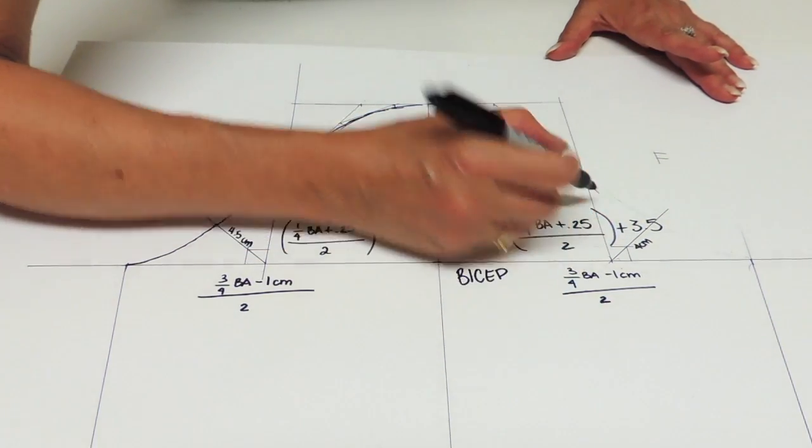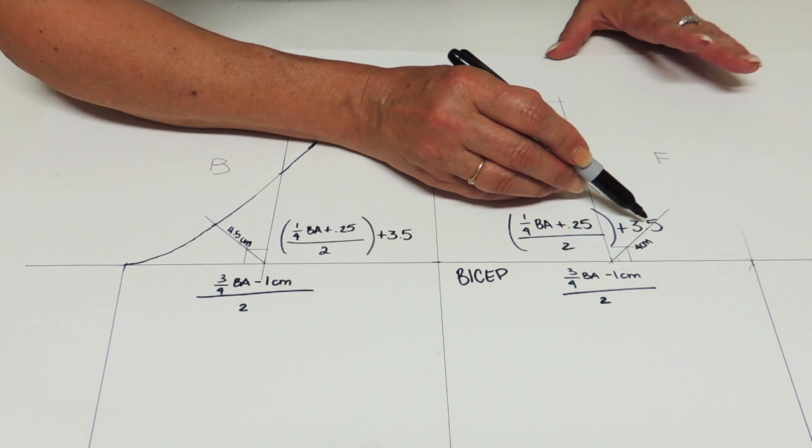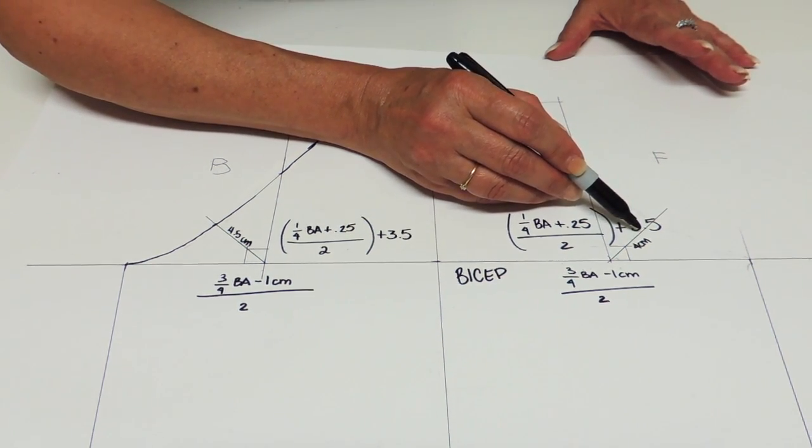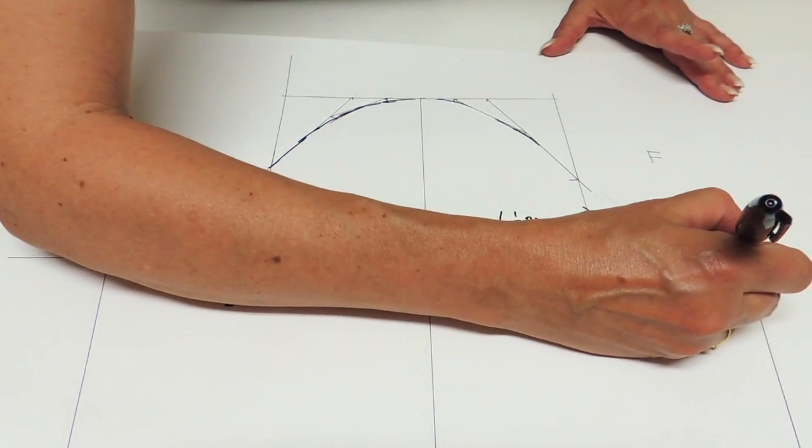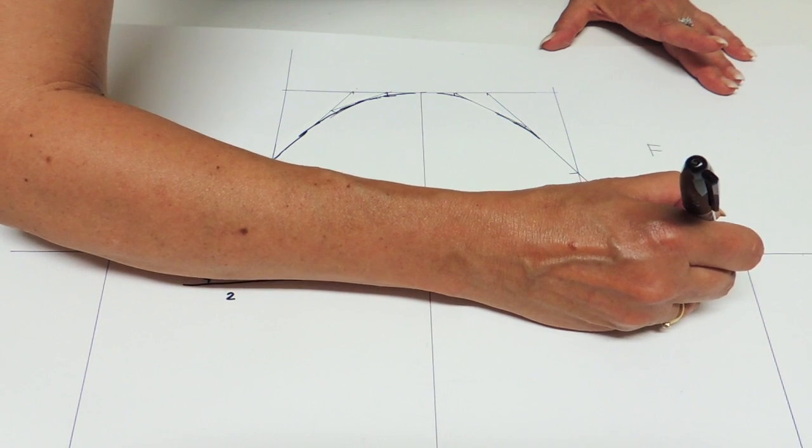And then from there, front you're going to measure about 4cm. And connect to the bicep level.